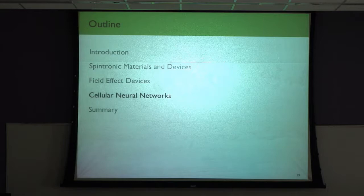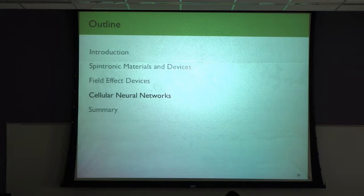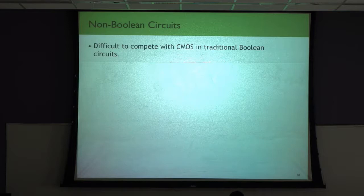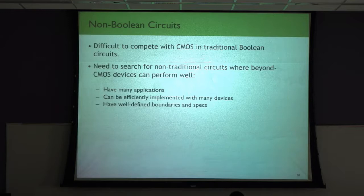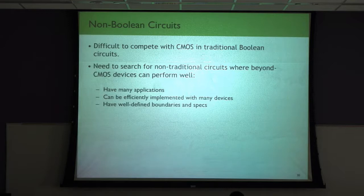Beating CMOS in Boolean applications is very difficult. That takes us to places where we try to take advantage of the physics of the device to make more efficient circuits. For benchmarking non-traditional circuits, we had requirements: the circuit should have many applications, it should efficiently implement many beyond-CMOS devices for meaningful benchmarking, and it should have well-defined boundaries and specifications. Cellular neural networks were a good candidate because they can do many tasks — they're a universal computer that can implement any function.